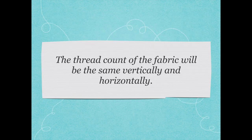The thread count of the fabric will always be the same vertically and horizontally, especially for cross stitch. There is some fabric out there that is slightly different horizontally and vertically, but you don't use that for cross stitch because your stitches would end up taller or longer than they should — you want your cross stitches to be square. So it doesn't matter which way you measure your fabric; your thread count is going to be the same either direction.